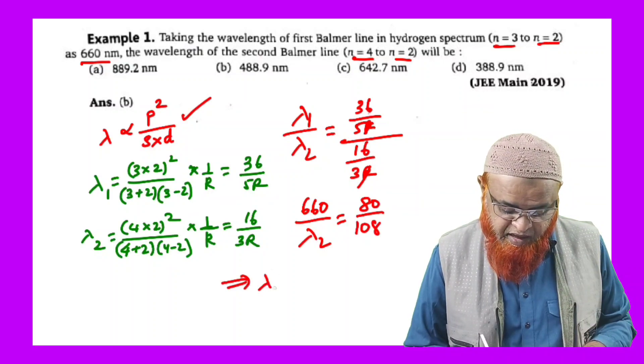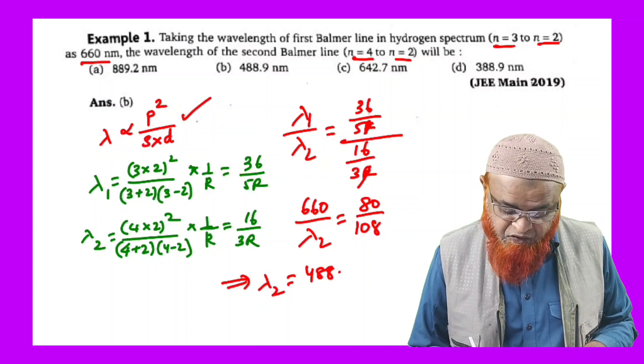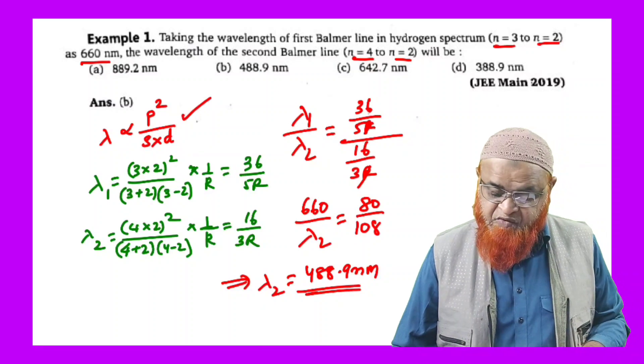After calculation, you will be getting 488.9 nanometers. So this is going to be your answer. Thank you.